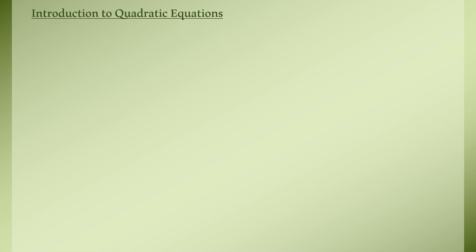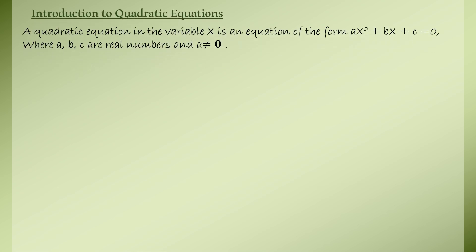A quadratic equation in a variable x is an equation of the form ax² + bx + c = 0, where a, b, c are real numbers and a is not equal to 0. One important thing to note is that a cannot be 0 — if it is 0, then that is not a quadratic equation.